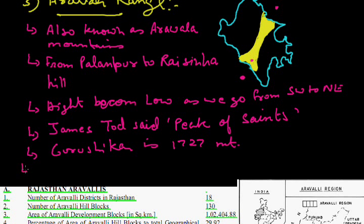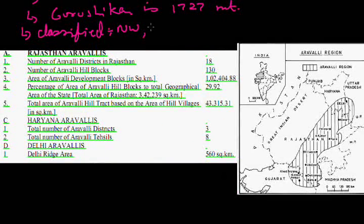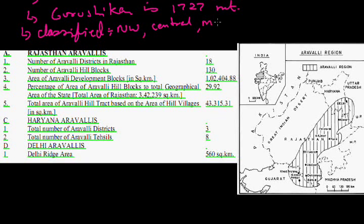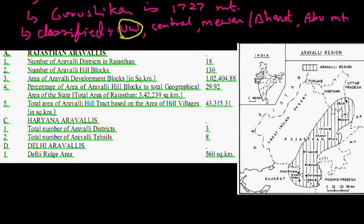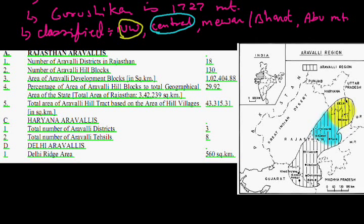The height of Gurushikhar is 1,727 meters. It is the highest peak between the Himalayas and the Nilgiris in India. We can classify the Aravali into four sub-divisions: the north western part, the central part, and as you can see in this map, the north eastern part near Jaipur.